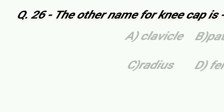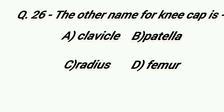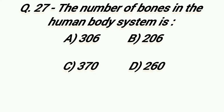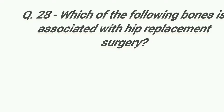The other name for kneecap is: Option A: Clavicle, Option B: Patella, Option C: Radius, Option D: Femur. Right answer is Option B, Patella. The number of bones in the human body system is: Option A: 306, Option B: 206, Option C: 370, Option D: 260. Right answer is Option B, 206.